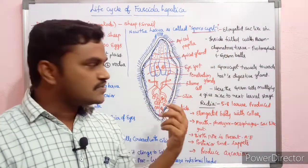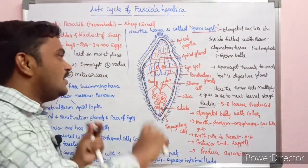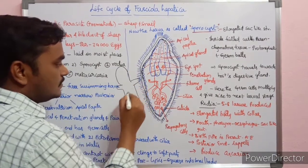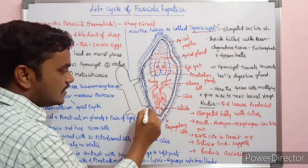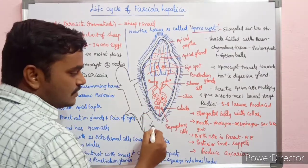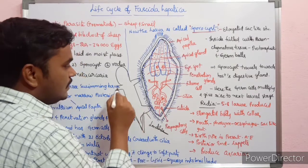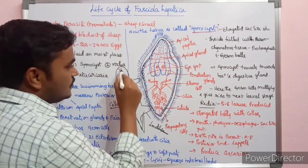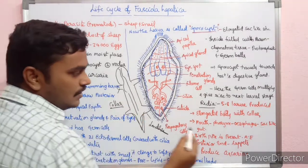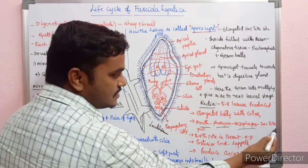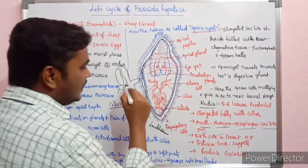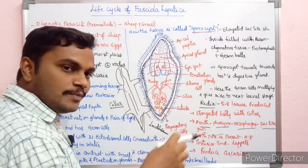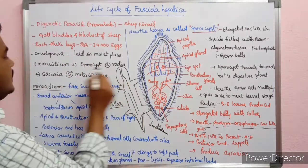The Redia has an elongated body with a collar. The collar is present in the anterior region. There are also lapids which serve as adherence structures. The mouth starts opening with a pharynx, esophagus, and sac-like gut. The birth pore is present at the anterior end, and from the birth pore the next larval stage comes out.